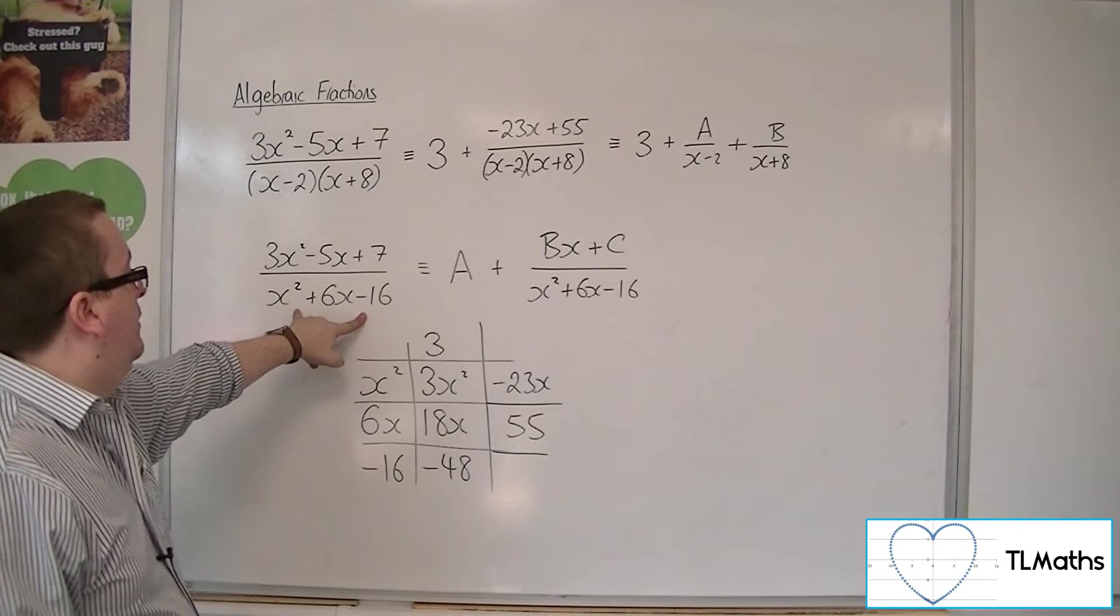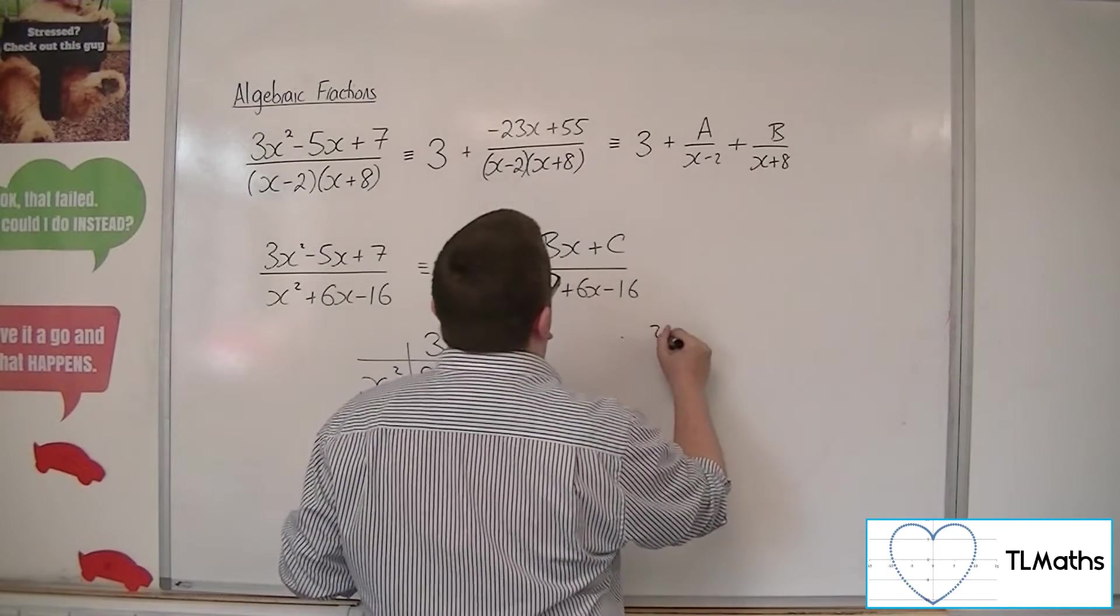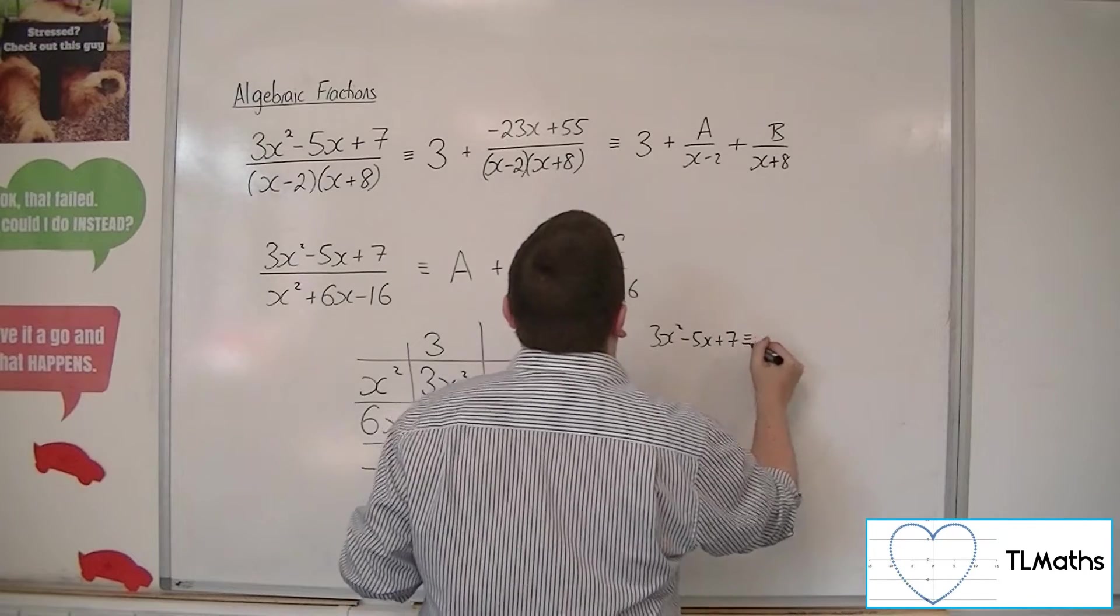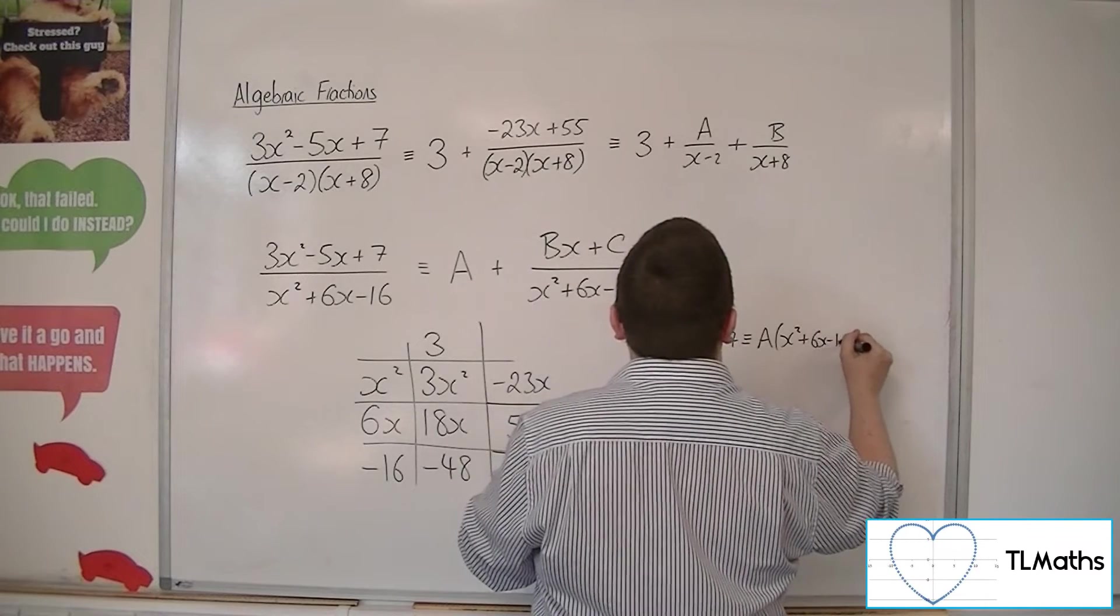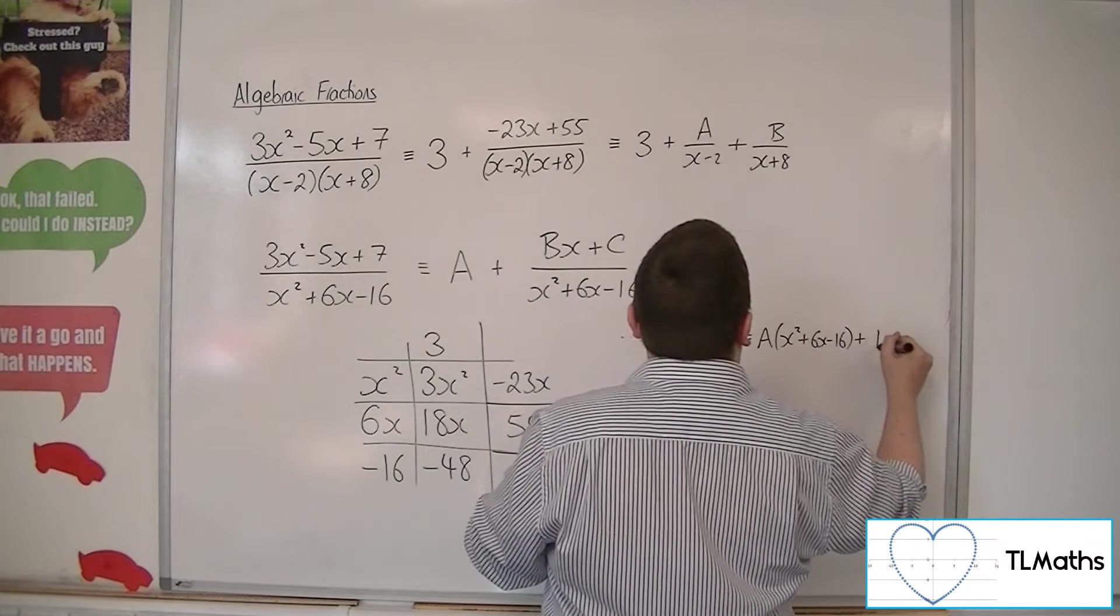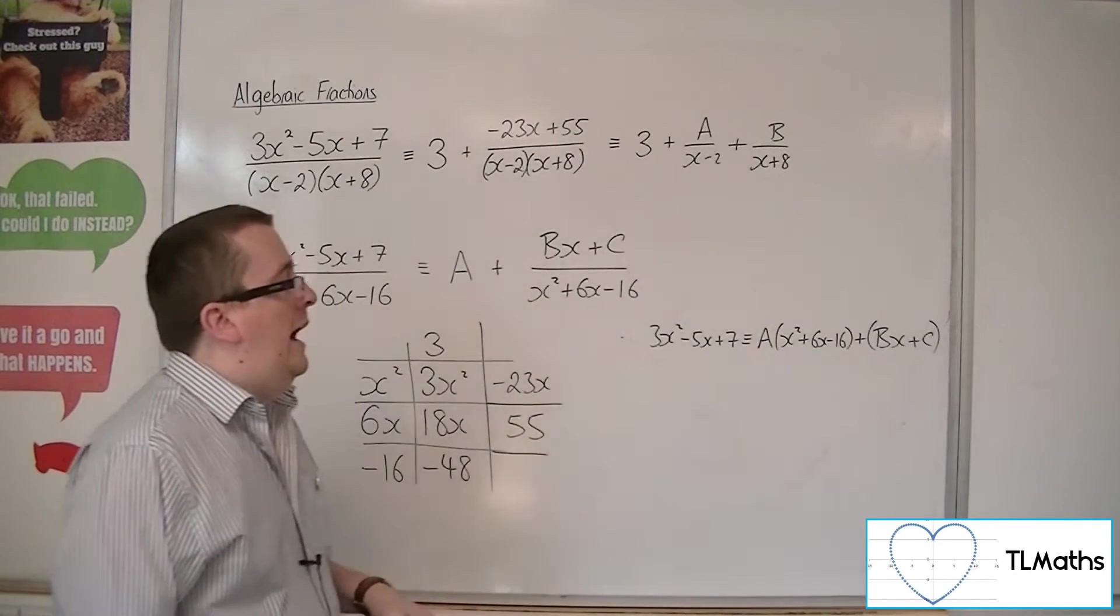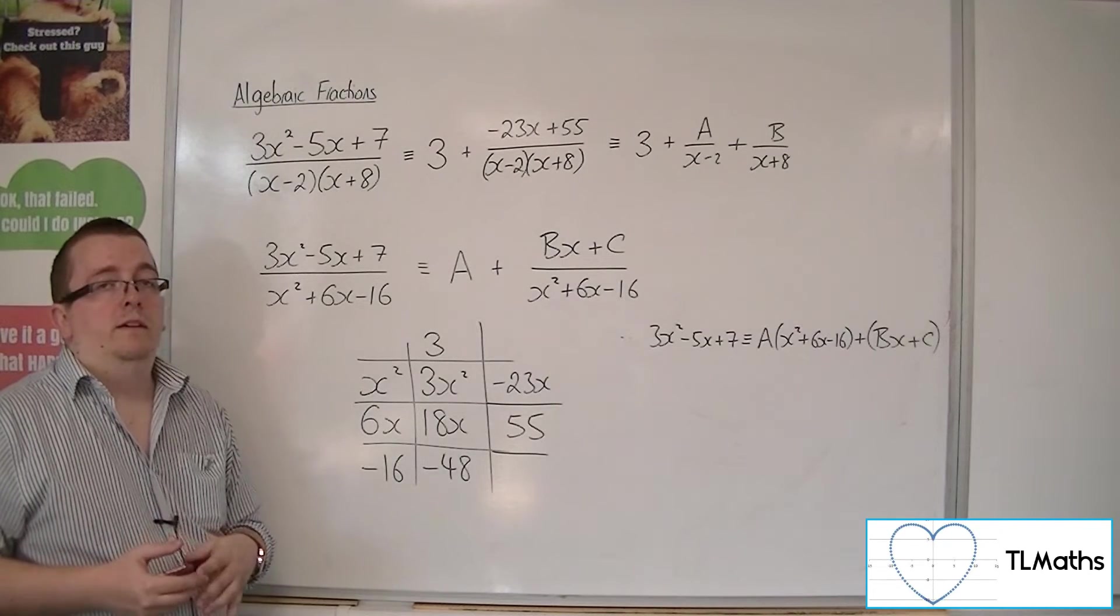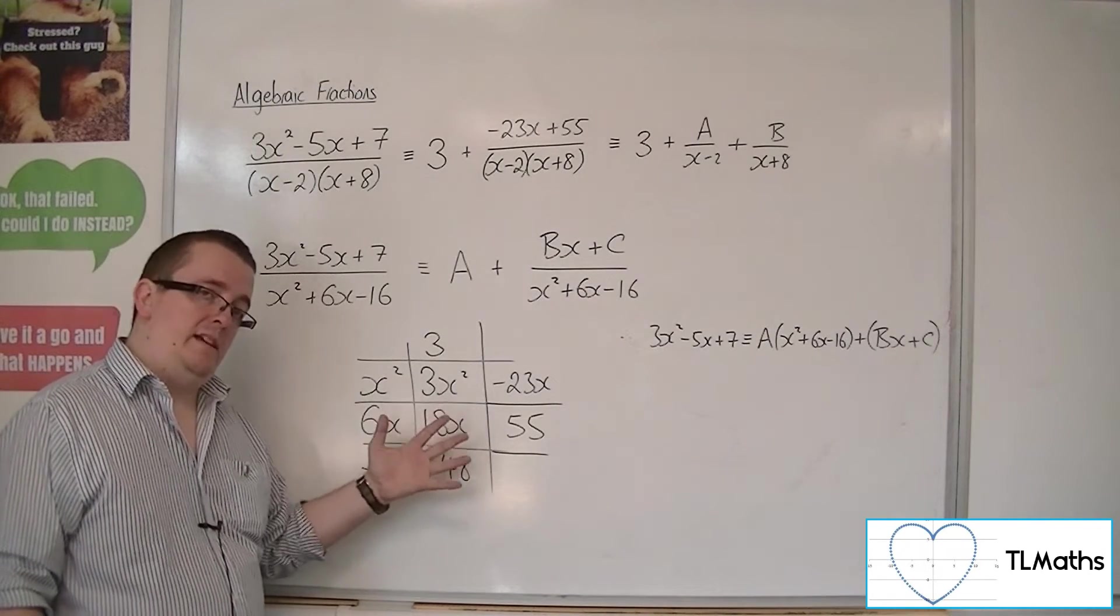Multiply both sides by the x squared plus 6x minus 16. So you could say, well, 3x squared minus 5x plus 7 must be the same as a lots of x squared plus 6x minus 16 plus bx plus c. And then you could substitute in values of x to find a, b, and c. But this way is certainly going to be easier.